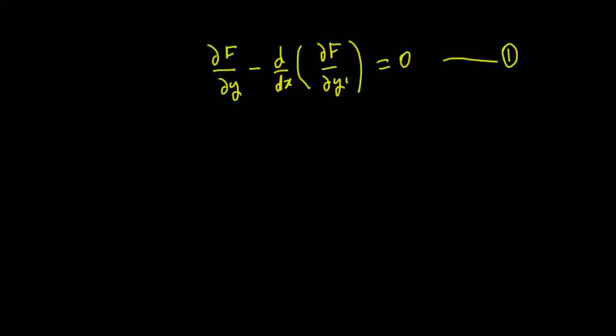In this video we're going to write the Euler-Lagrange equation in terms of the total derivative. I've written the Euler-Lagrange out here: partial f upon partial y minus d/dx of partial f upon partial y'. Now, if we are going to write this out in terms of a total derivative, the only factor we're differentiating as a total derivative is this partial f upon partial y', because that's getting differentiated with respect to d/dx.